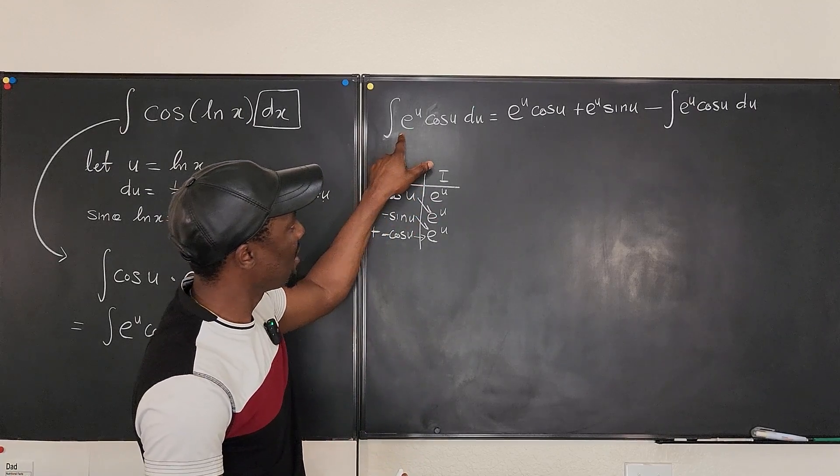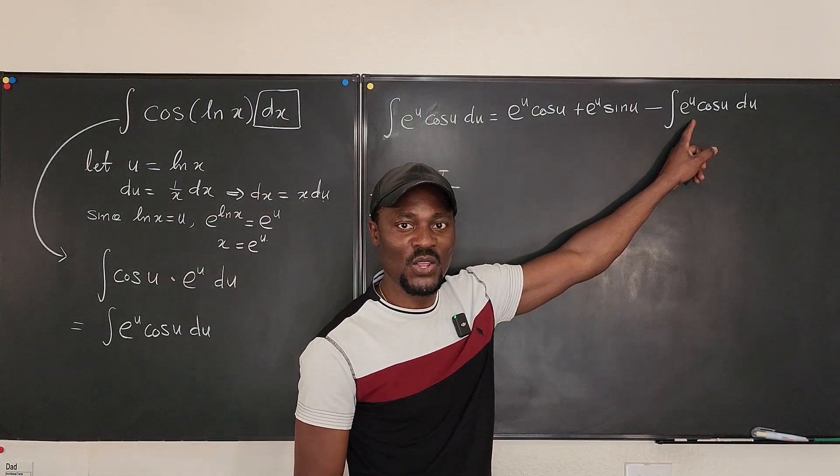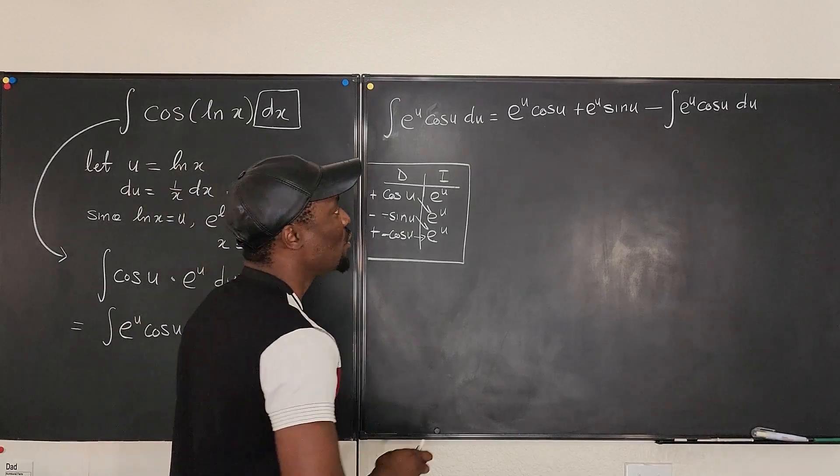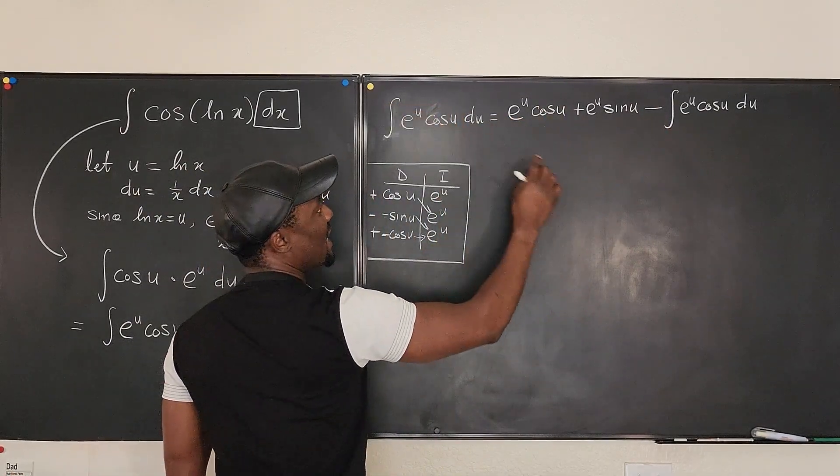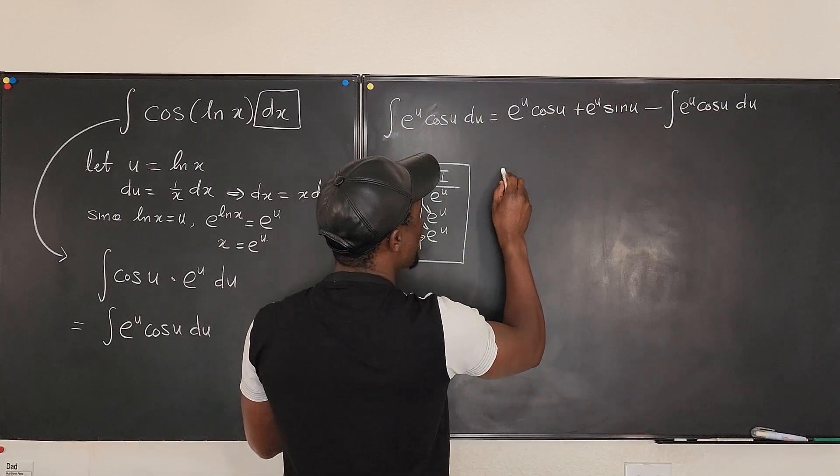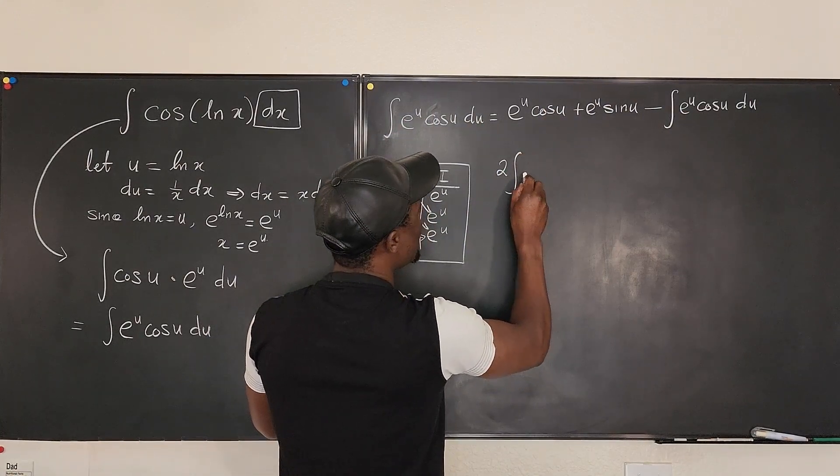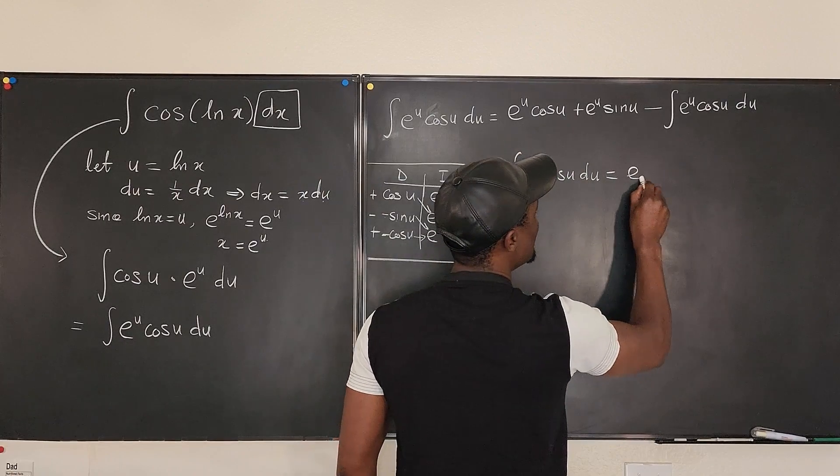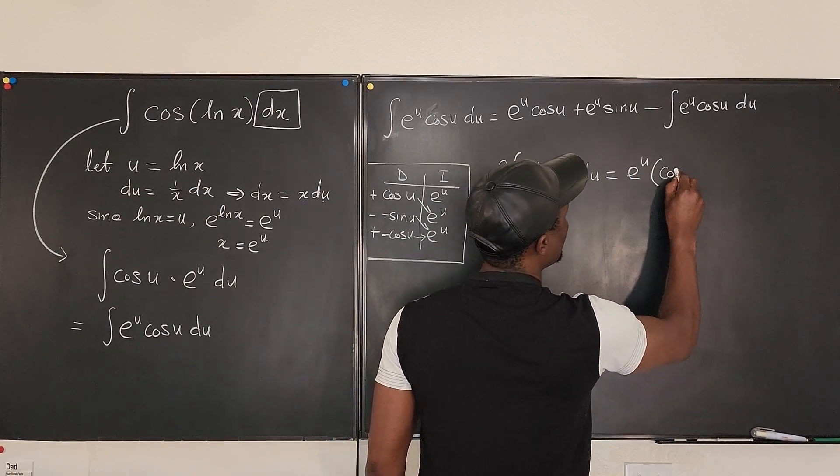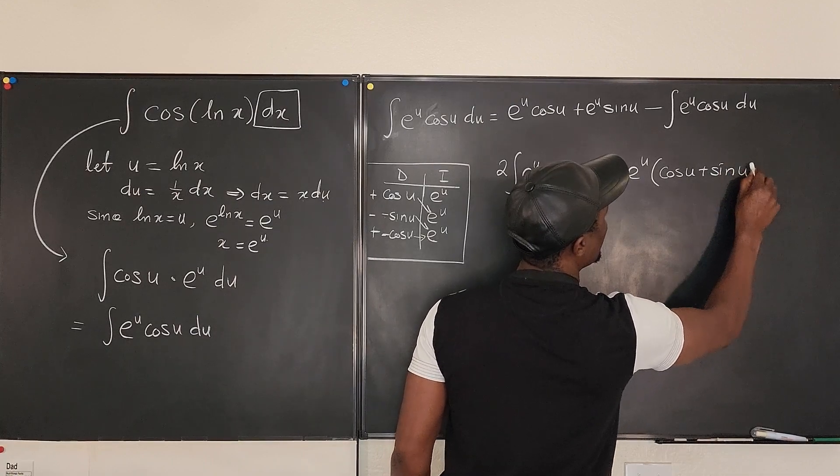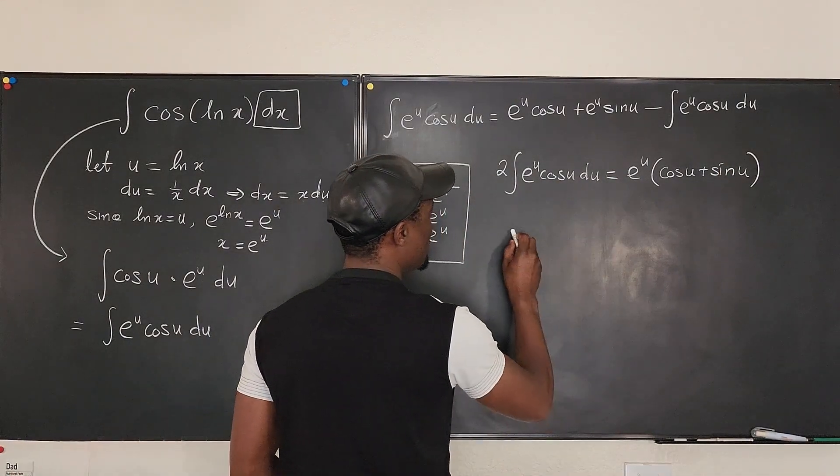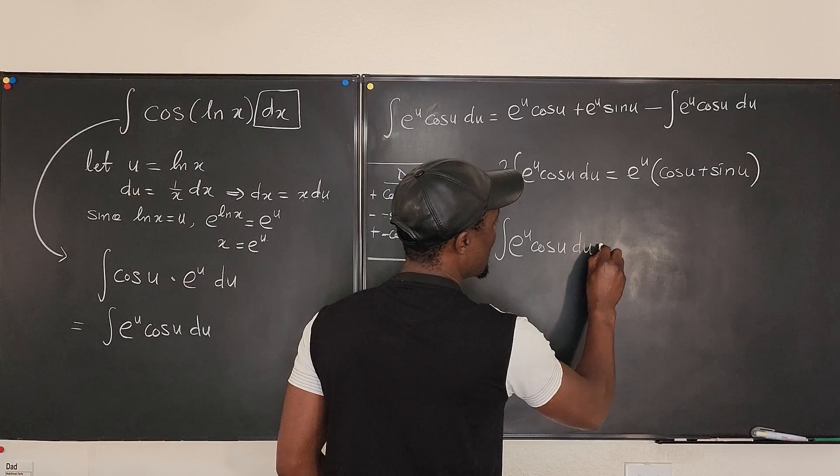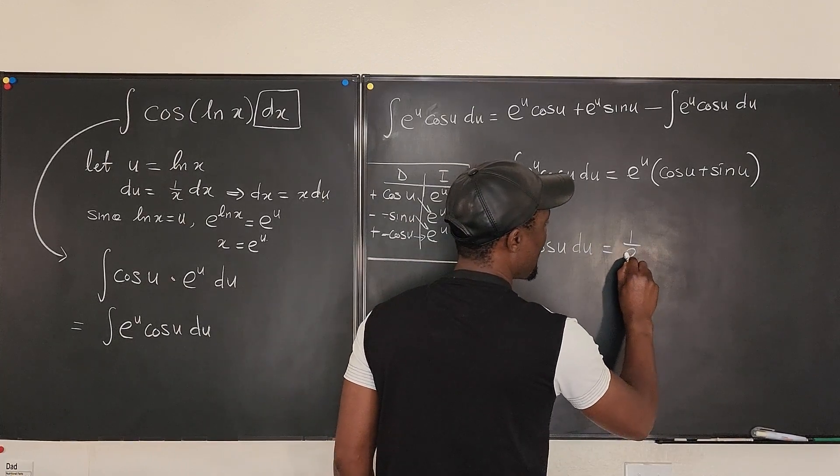So now that we have this, what do we have? Well, it looks like the question has repeated itself in the answer. So I can bring this over here. Let's hide this somewhere. Okay, so it looks like this is here, this is here. I can add this to both sides so that what I have—I'll have two of this: e to the u cosine u du is equal to e to the u cosine u plus sine u here. If I divide both sides by two, I'm going to have the integral e to the u cosine u du is equal to one half of e to the u multiplied by the cosine of u plus sine u.